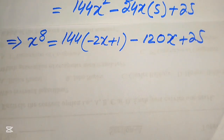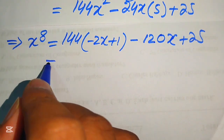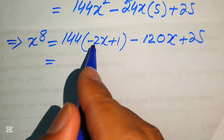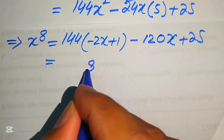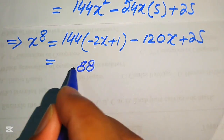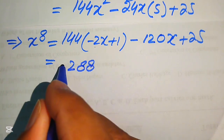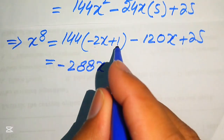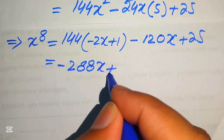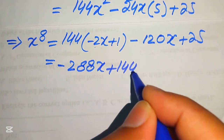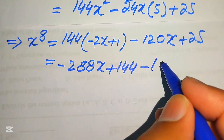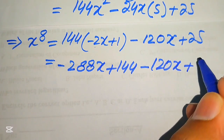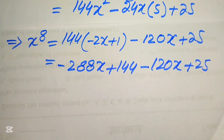Multiplying 144 across both terms: 144 times minus 2x gives minus 288x, and 144 times 1 gives 144. So we have minus 288x plus 144 minus 120x plus 25.